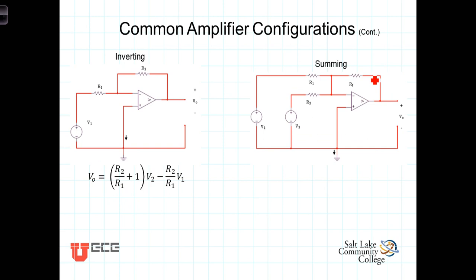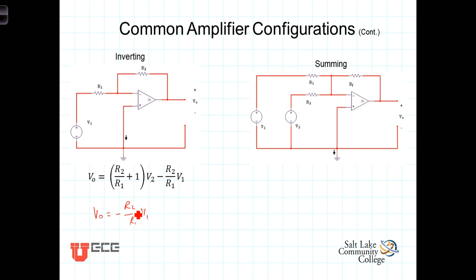The next common configuration is the inverting amplifier. The signal source V1 is applied to the inverting terminal, and the non-inverting terminal is tied to ground. So V2 equals zero, and we're left with: Vout equals negative R2/R1 times V1. The output voltage has the opposite sign as the input voltage, scaled by the ratio R2/R1. This gain term, negative R2 over R1, is the closed-loop gain for the inverting amplifier.